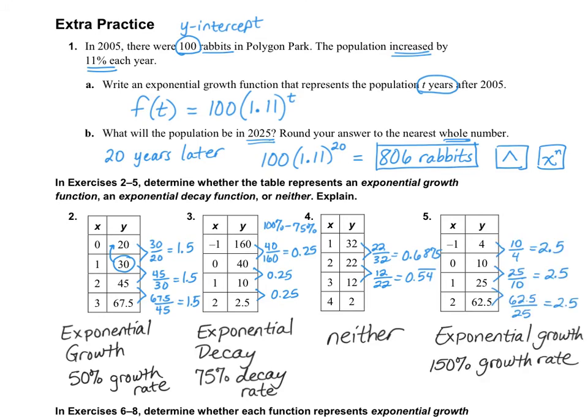For number five, I got my multiplier was 2.5, which means that it's greater than 100%. So it's exponential growth. Now it's 150% growth rate because we start with 100% and we're adding 150% in order to get us to 250%. So that's how I got the 150% growth rate.